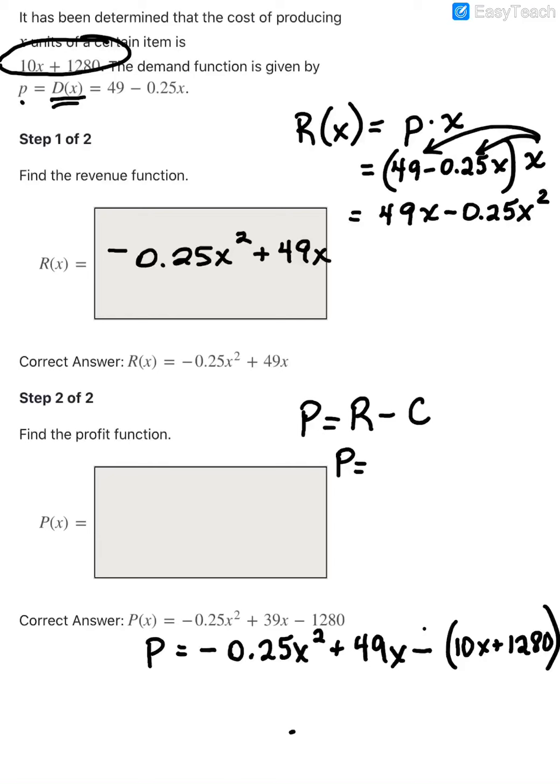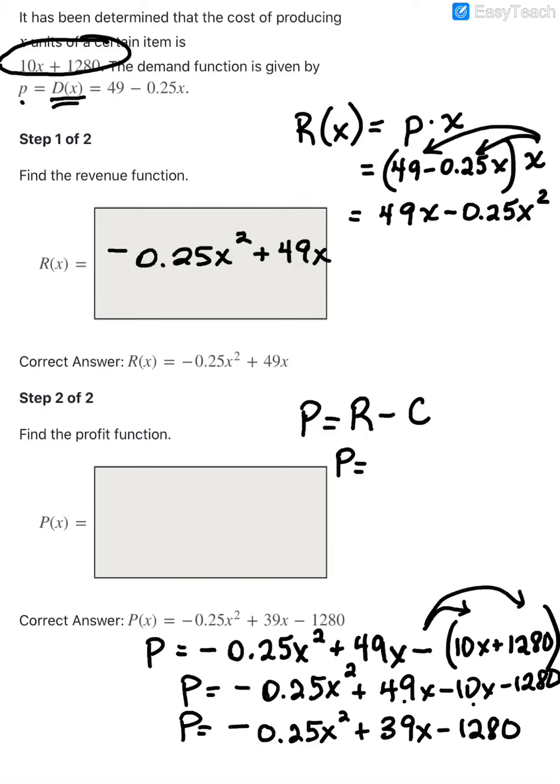Now we're going to go ahead and distribute the minus. So for my profit, we've got negative 0.25x squared, we have our 49x, we're going to say minus 10x and then minus 1280. And then we will combine like terms. So the x squared term is by itself, so it's still negative 0.25x squared. When I combine a positive 49x minus a 10x, that's going to leave me with positive 39x. And then I still have minus the 1280. So that would be my profit equation in that case.